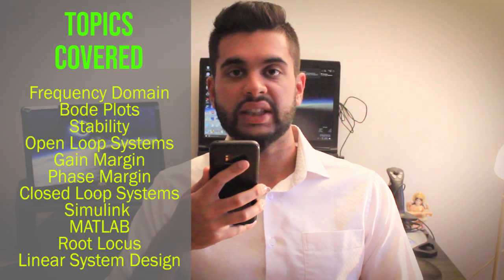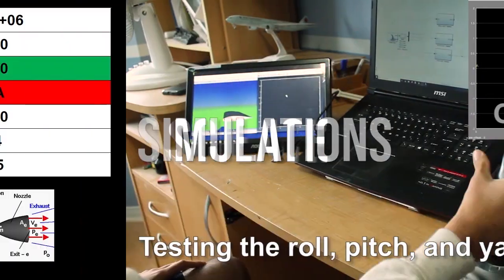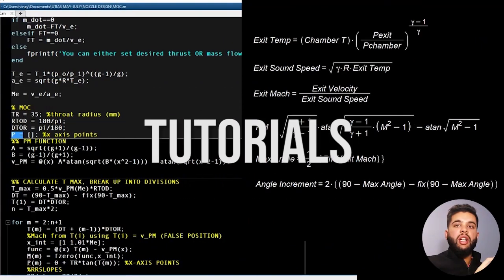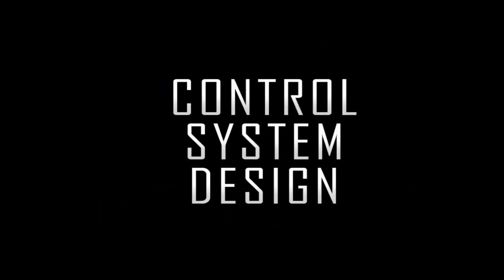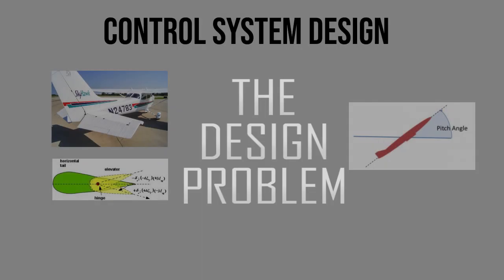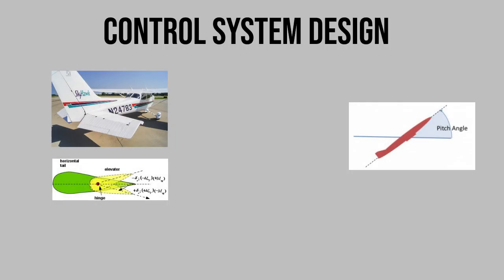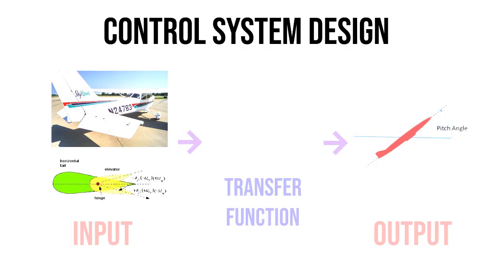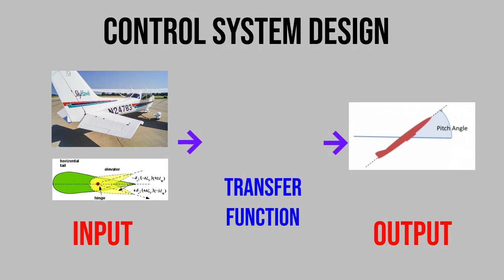For this example we'll be using a controller to control the pitch angle of this airplane. The problem is that we have to input our elevator deflection, because in aircraft the elevator controls the pitch. We can represent this by a transfer function which is used in a standard control system. This will be a linear system and you can see the transfer function here.